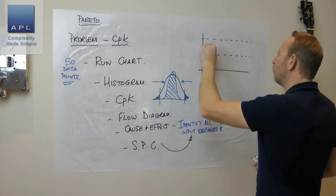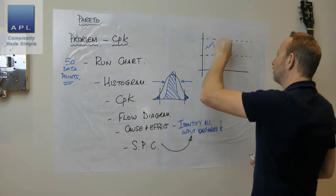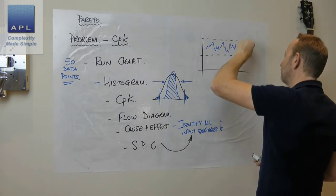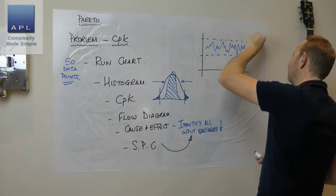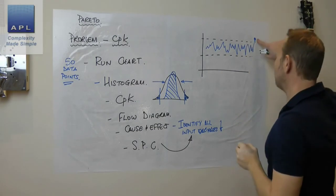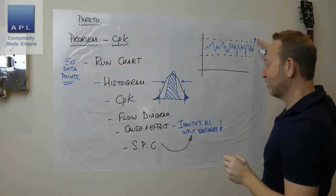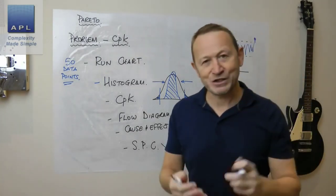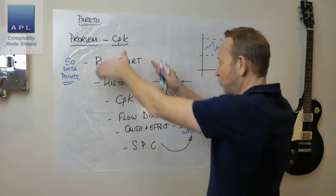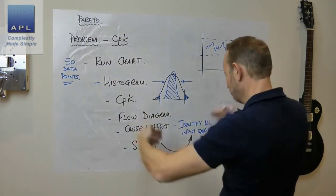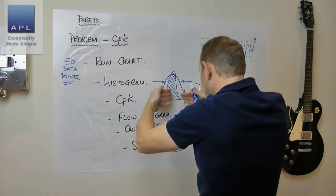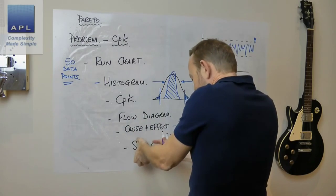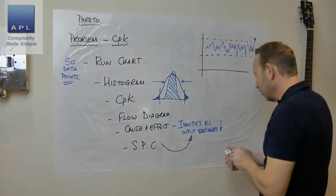Now that I've got a control chart and a control plan to work to, when I get an out-of-control limit, what do I do? I audit the control plan. It's very simple. You've used seven quality tools, got the process under control, locked it in with SPC, and created a control plan.